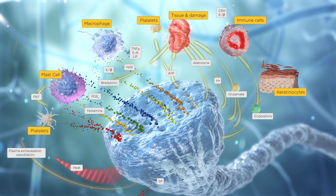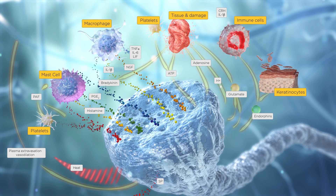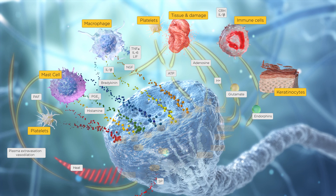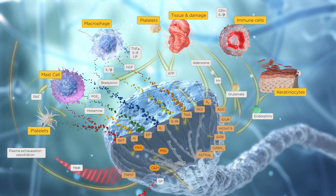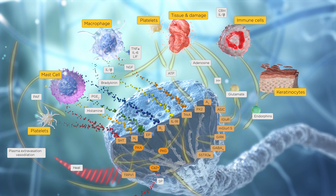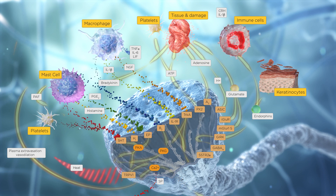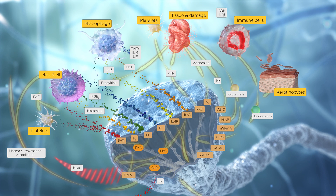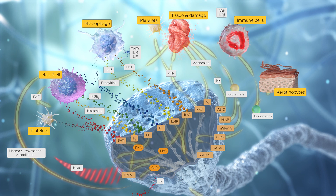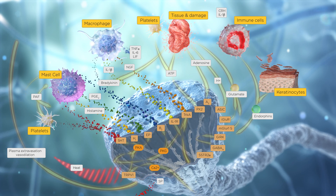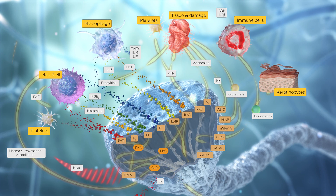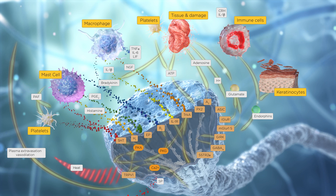Substance P and calcitonin gene-related peptide, CGRP, promote vascular leakage and vasodilation, allowing circulating cells, plasma proteins, and inflammatory mediators to infiltrate the affected area. Substance P interacts with postsynaptic dorsal horn receptors, setting the magnitude of the nociceptive response.